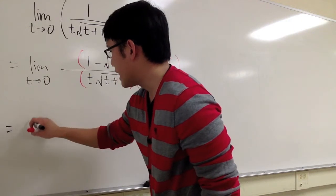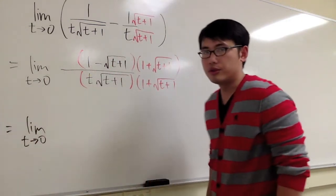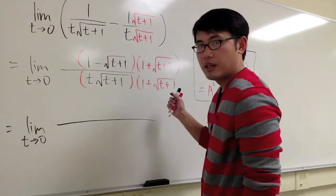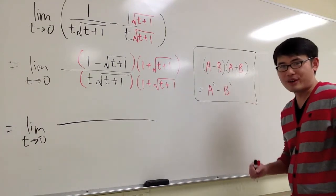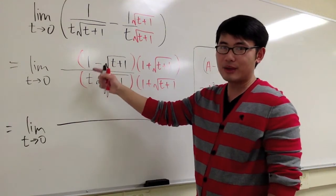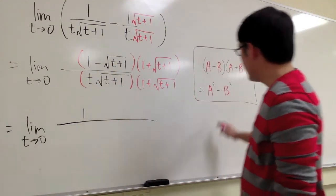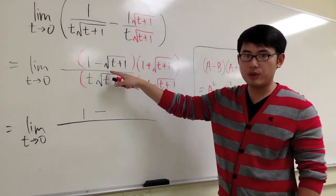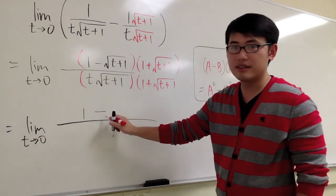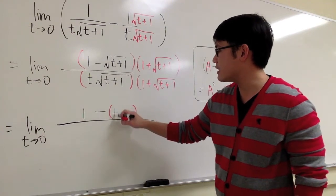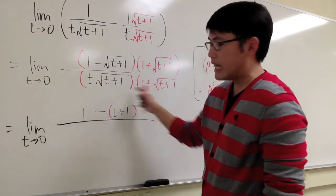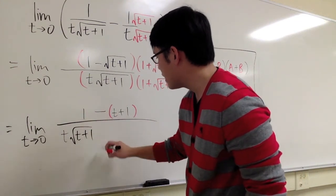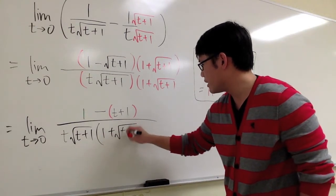Let's see what we get after multiplying this out. This is still the limit as t approaches 0. The top is in the form of (a minus b)(a plus b), which equals a squared minus b squared. To multiply the top, I square the 1 to get 1, then minus the second term squared. Since that term is a square root, squaring it cancels the root, giving me the inside: t plus 1, in parentheses because of the subtraction. On the denominator, I keep it as t times square root of t plus 1, times 1 plus square root of t plus 1.